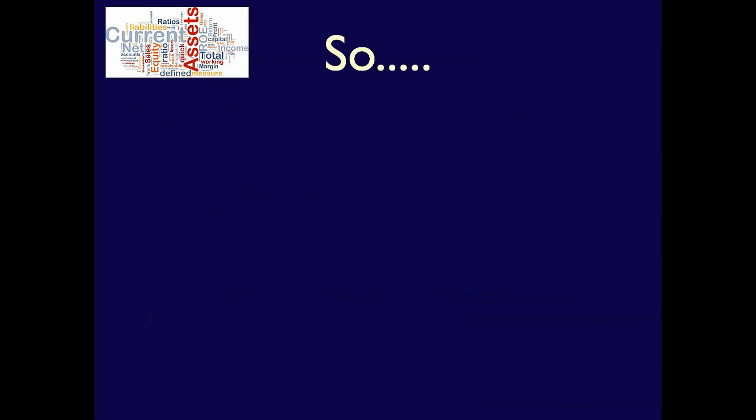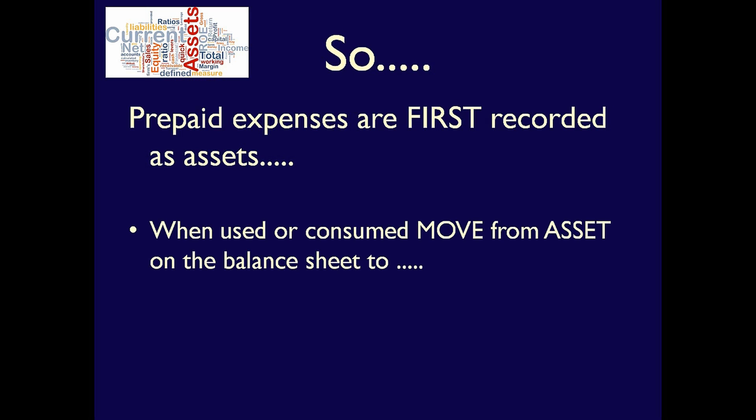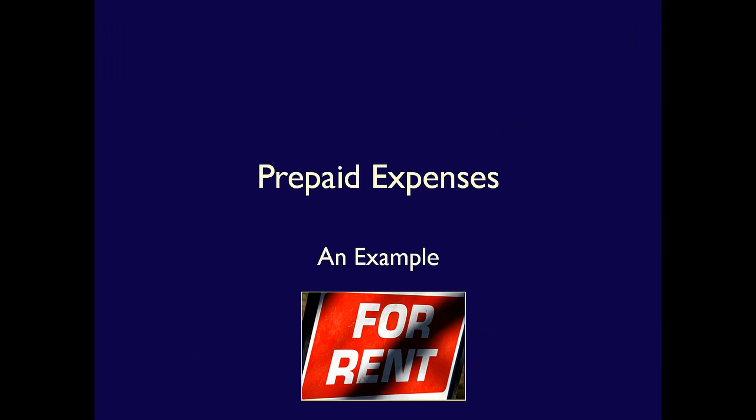Let's summarize what we know about prepaid expenses. When we pay for a prepaid expense, we record it as an asset because it has future benefit for the company. Then, when we use or consume the asset, we'll need to move some of the value of that asset from the balance sheet over to an expense in the income statement. This is because we've used or consumed it in order to help generate revenue. Let's do an example to solidify our understanding and actually see the entries that impact the accounting equation.